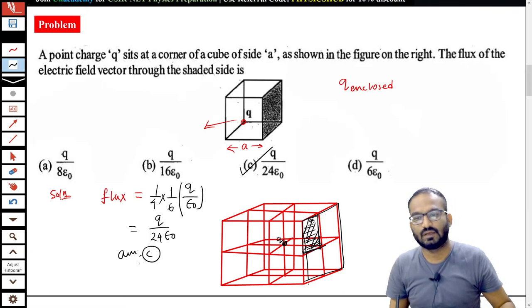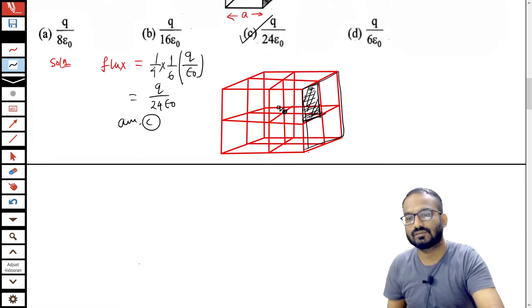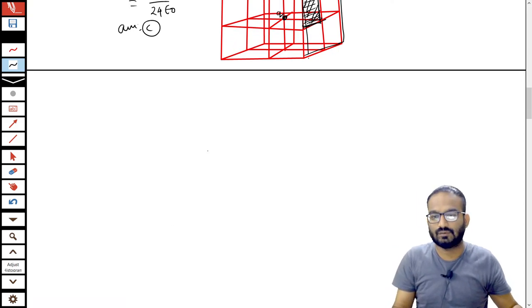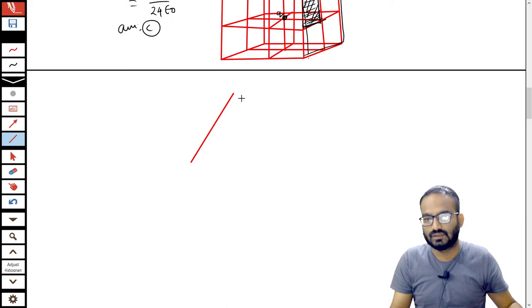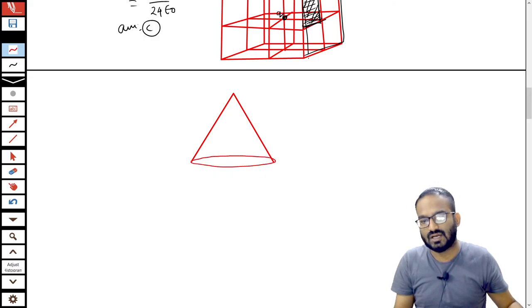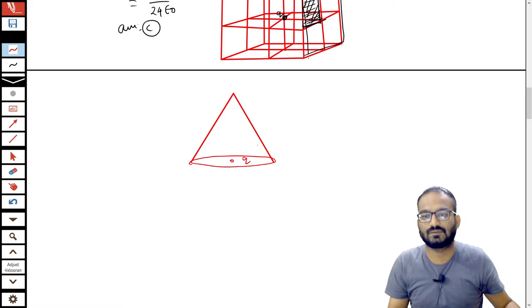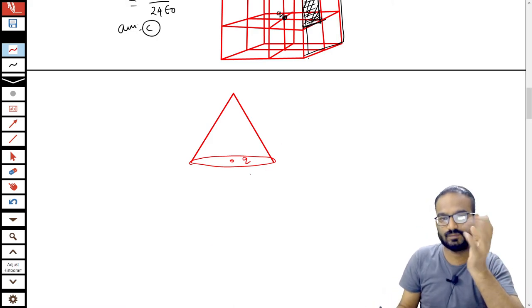An additional thing I am going to give you. Let's say we have a cone and we have placed a charge, let's say Q at the apex. So what will be the total flux coming out of this curved surface? How can you do this?